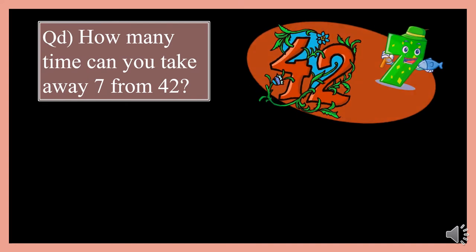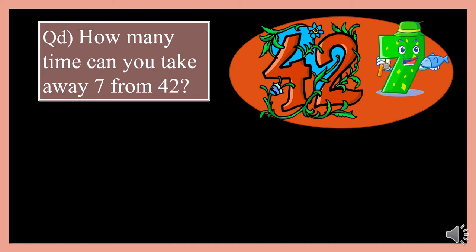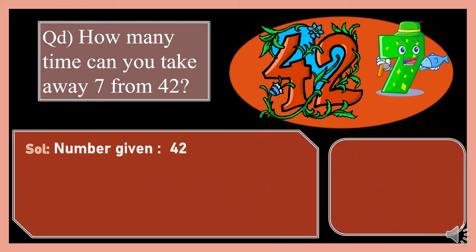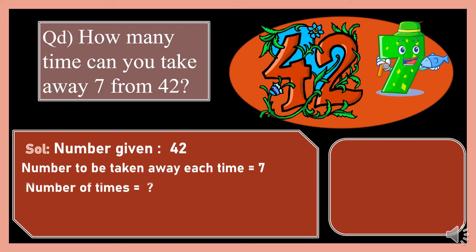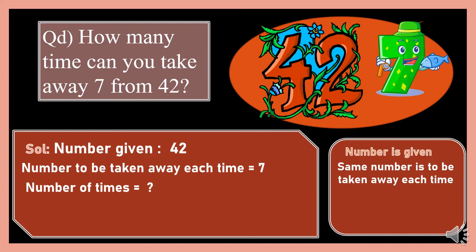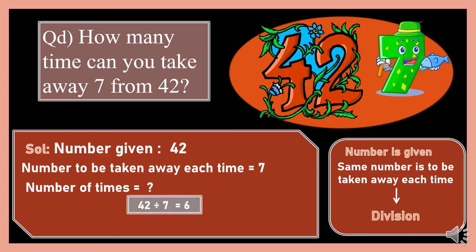Let's see this question: How many times can you take away 7 from 42? The number given is 42; the number to be taken away each time is 7; the number of times we will be taking away 7, we don't know. The same number is to be taken away each time — that is the condition of subtracting the same number repeatedly, so we divide. 42 divided by 7: in the 7 times table, 7 sixes are 42, so the answer is 6. We can take away 7 from 42 six times. This was the last condition: when we subtract the same number repeatedly, we divide.